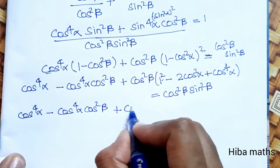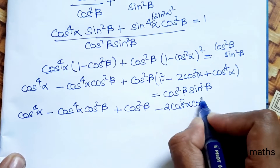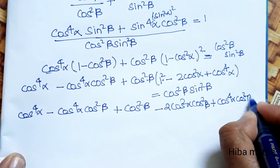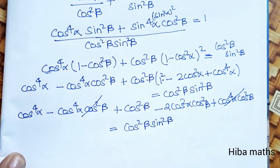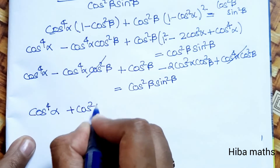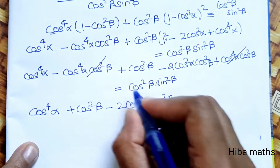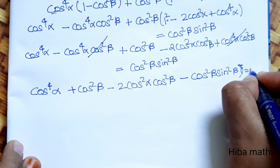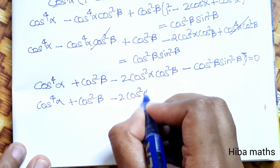Next line: cos⁴α − cos⁴α·cos²β + cos²β − 2·cos²α·cos²β + cos⁴α·cos²β = cos²β·sin²β. This term cancels, giving cos⁴α + cos²β − 2·cos²α·cos²β = 0.